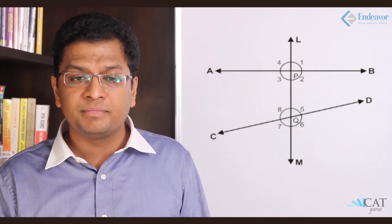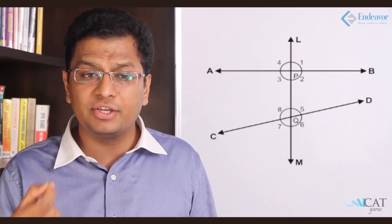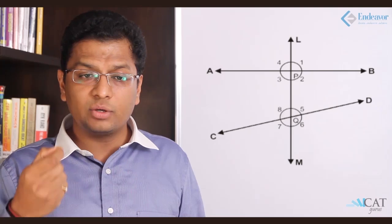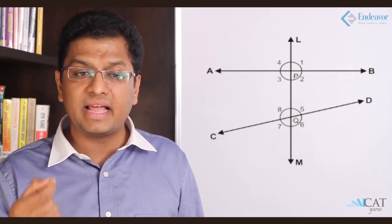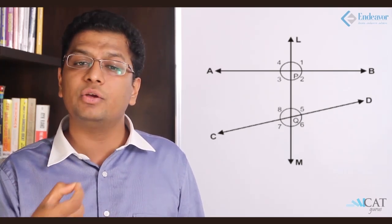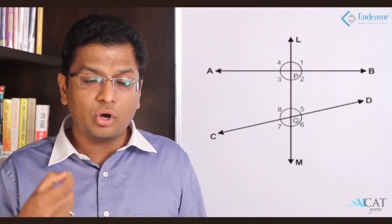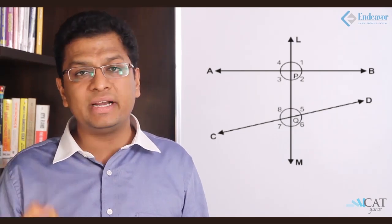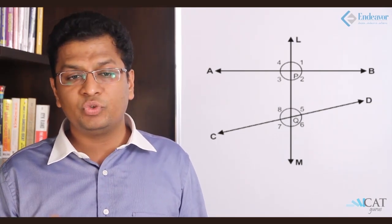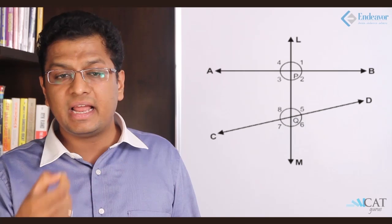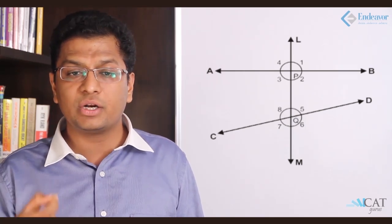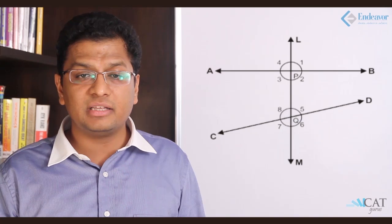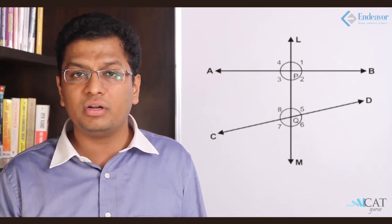Now let's look at different types of angles. An acute angle is less than 90 degrees — we can say angle 5 and angle 7 are acute angles. An obtuse angle is more than 90 degrees but less than 180 degrees — angles 6 and 8 are obtuse angles.